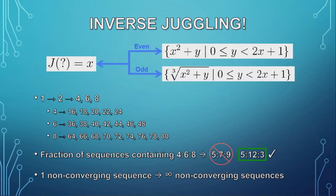If you look at the inverse of the juggler function, the only way to get to 1 is through 2, and the only way to get to 2 is through 4, 6, or 8. 4, 6, and 8 have 5, 7, and 9 predecessors, respectively. Because of this, we expect that the ratio of sub-sequences that go through 4, 6, or 8 would be 5 to 7 to 9. However, at least in the first million sequences, this isn't the case. 6 shows up in 60%, while 4 and 8 are only in 25 and 15%, respectively. We don't yet know why this is.